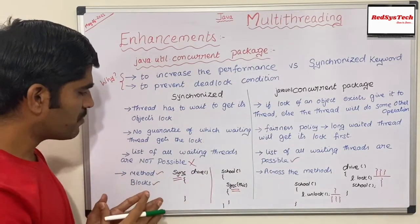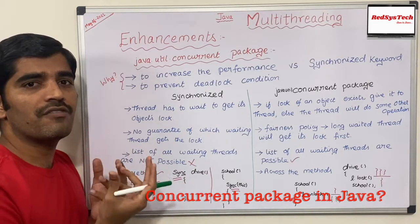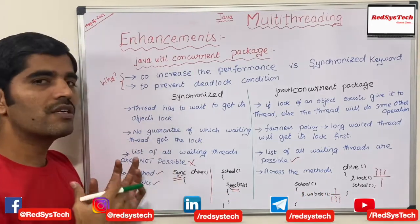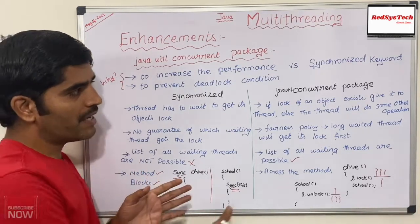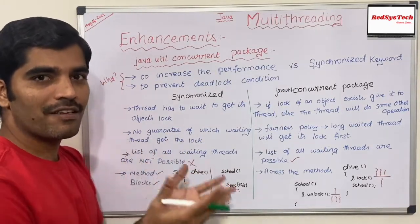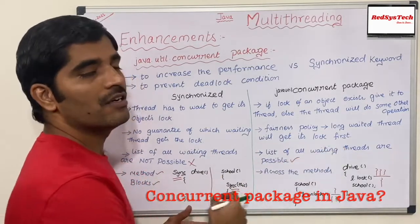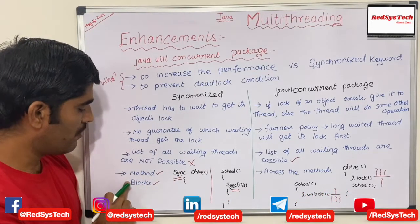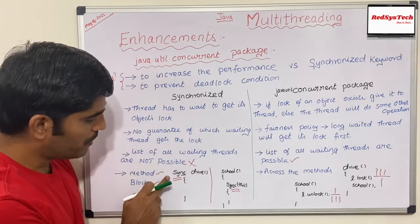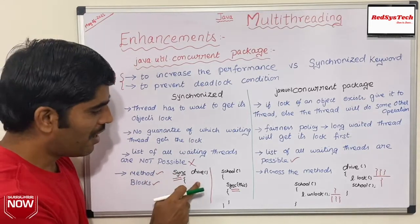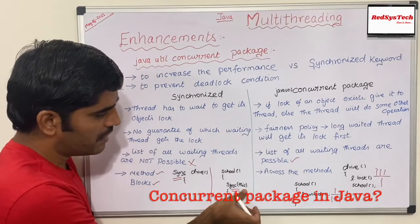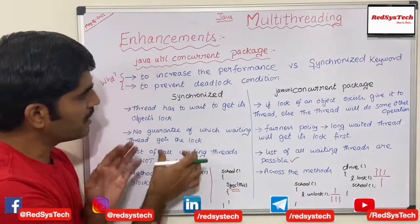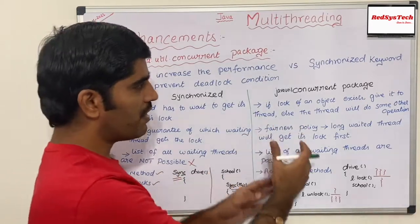The third difference: synchronized is just a keyword in Java. By using the synchronized keyword, you won't know how many threads are actually waiting to get the object's lock. But with the concurrent package — which has methods, interfaces, and classes — you can get the list of all waiting threads for a particular object's lock. Moreover, synchronized can be used at the method level or block level. At the method level, you add it to the method signature; at the block level, you apply it inside a method.